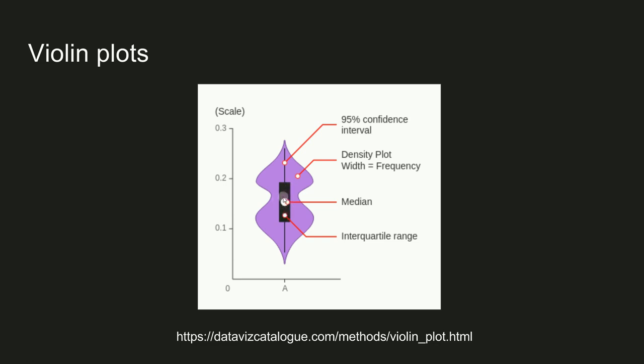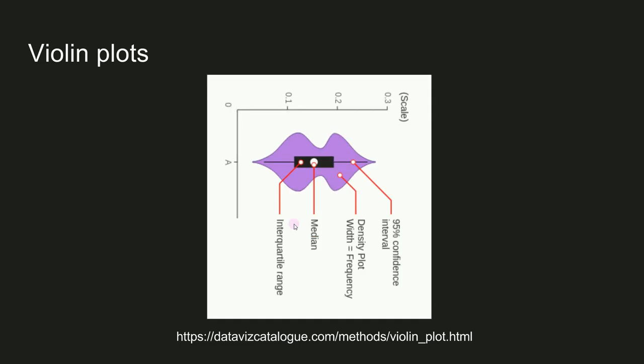Sometimes you'll also see the mean, and in some cases you will see dots or asterisks indicating extreme data values or outliers. To understand how to interpret a violin plot, imagine rotating this image and looking at it on its side as if it were a mountain landscape.